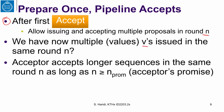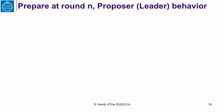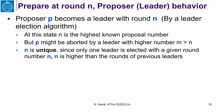An acceptor accepts longer sequences in the same round, as long as the round number is higher than or equal to the promise of the acceptor. Now let us look at the prepare phase at round N when a proposer becomes a leader. When a proposer becomes a leader due to the leader election algorithm, N is the highest known proposal number. This proposer might be aborted by a leader with a higher number, but N is unique — since only one leader is elected with a given number N, and N is higher than the rounds of previous leaders.